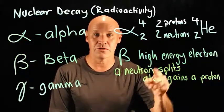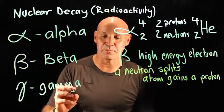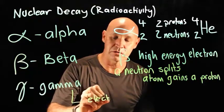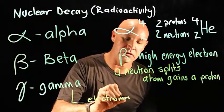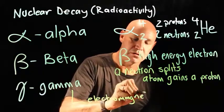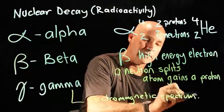The next one, gamma, is just radiation. It's part of the electromagnetic spectrum. So it's high energy radiation, part of the electromagnetic spectrum.